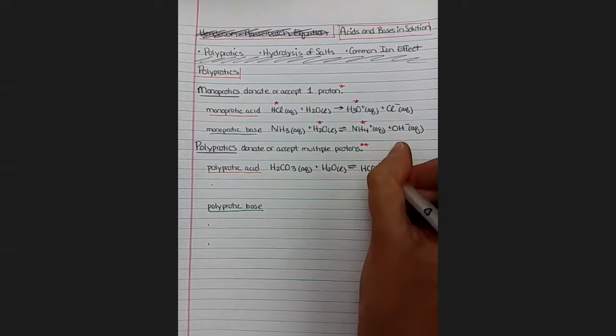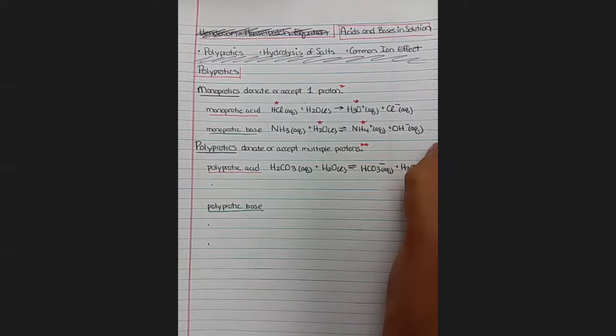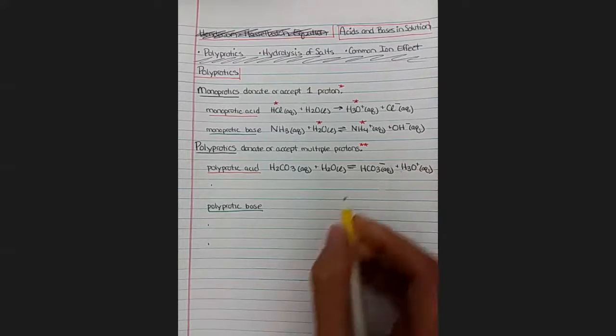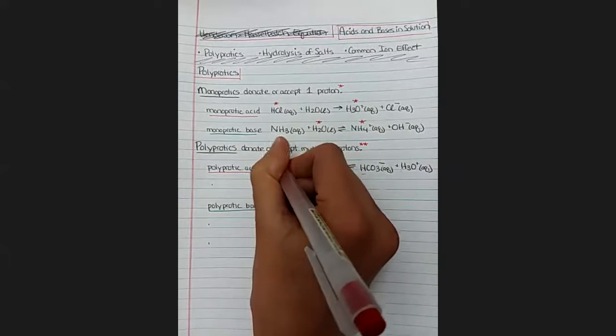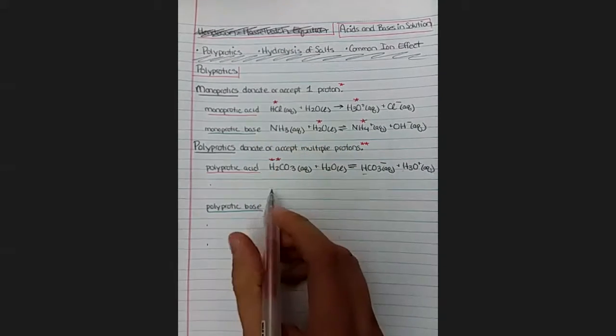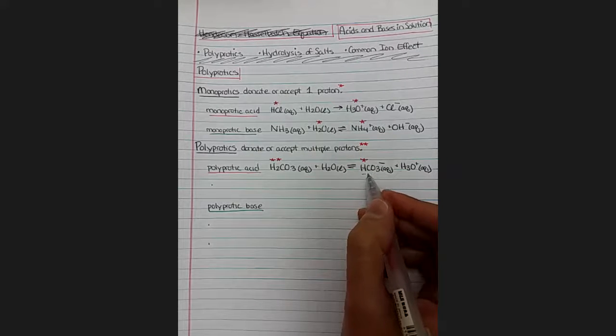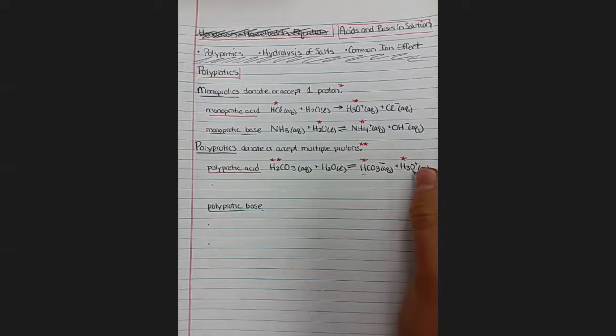So the first time it releases a proton, it only has one H at the beginning. It becomes HCO3 minus and H3O plus. And then we can track the protons. So here there are two acidic protons. When it forms its conjugate pair, it only has one. So one of those protons was given to water to form H3O plus.